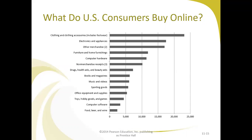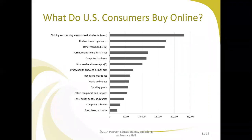Regarding what consumers buy online — looking at the Indian market, in Maharashtra people spend heavily on food. Clothing and accessories are very high in online purchases, followed by electronic appliances, other merchandise, and furniture. However, food, beer, and wine have lower online purchasing rates compared to software, toys, hobbies, and related goods, as consumers prefer to buy those from brick-and-mortar stores.